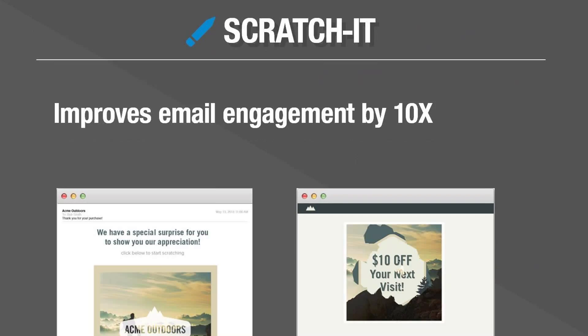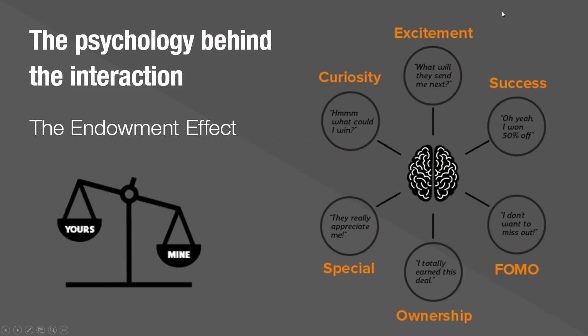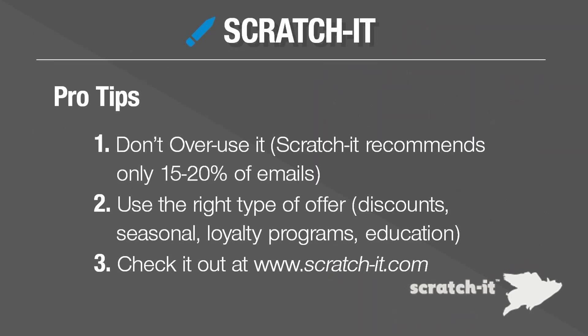Statistics show this improves email engagement by 10x — we are simpletons in a very good way. The psychology behind the interaction: excitement, curiosity, 'what would they send me, maybe 10, 15, 20% off?' Don't send this in every single message — once in a while, with the right types of offers: seasonal discounts, loyalty programs, further education. Check out Scratchit.com.